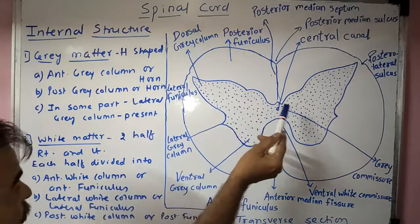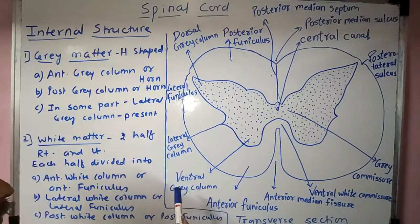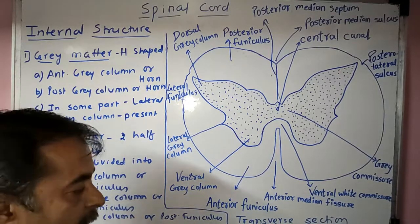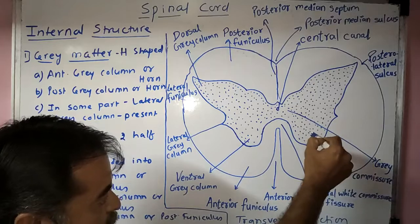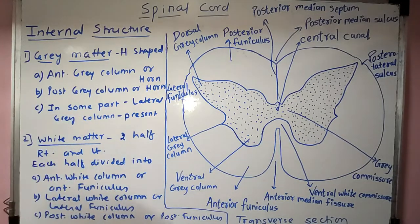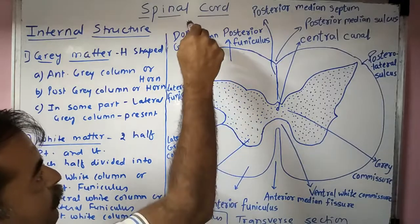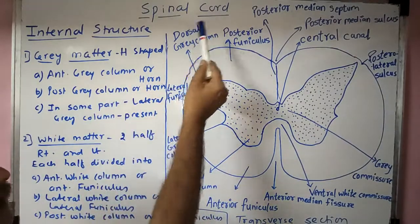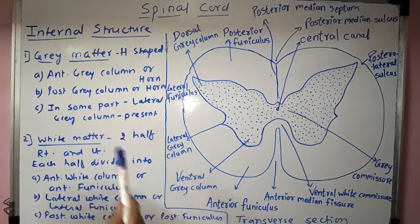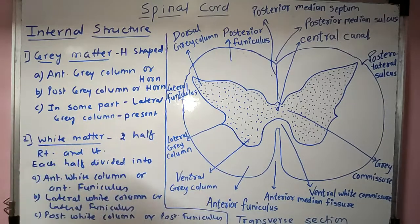The grey matter is S-shaped and has an anterior grey column, also called the ventral grey column or anterior horn. The second part is the posterior grey column, also called the dorsal grey column or posterior horn. In some parts of the spinal cord, a lateral grey column is also present, but not in all regions.